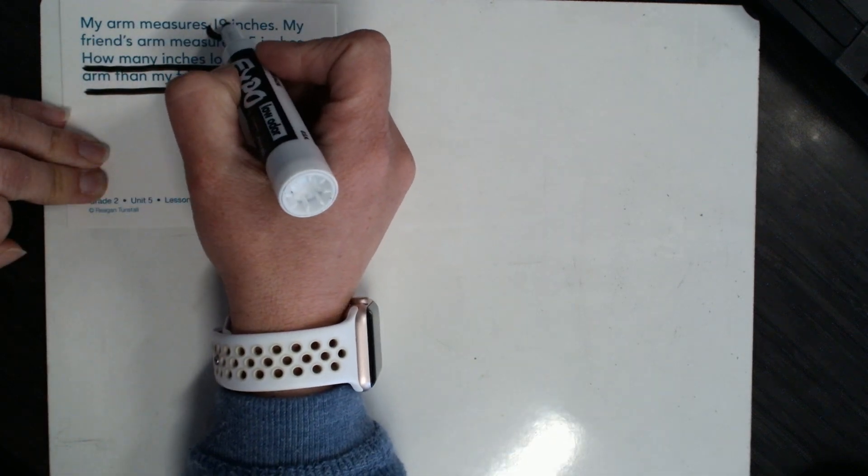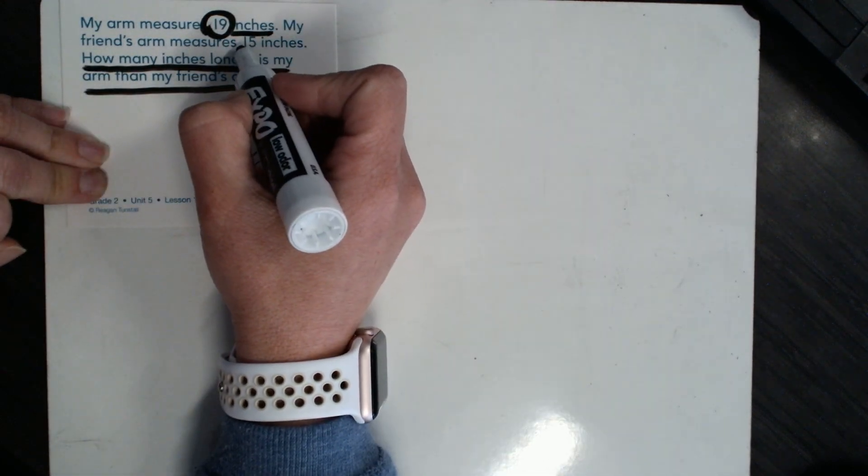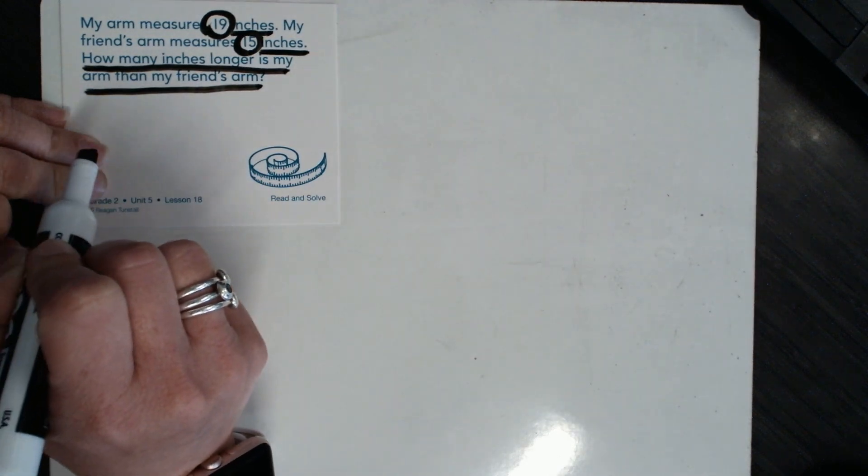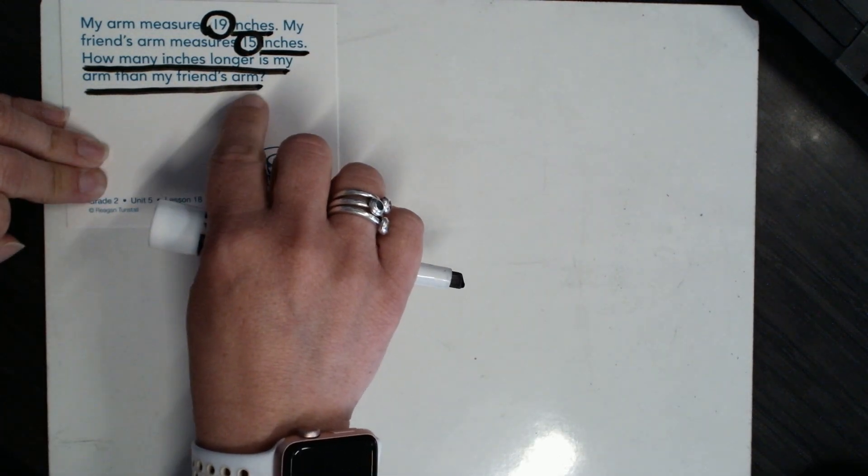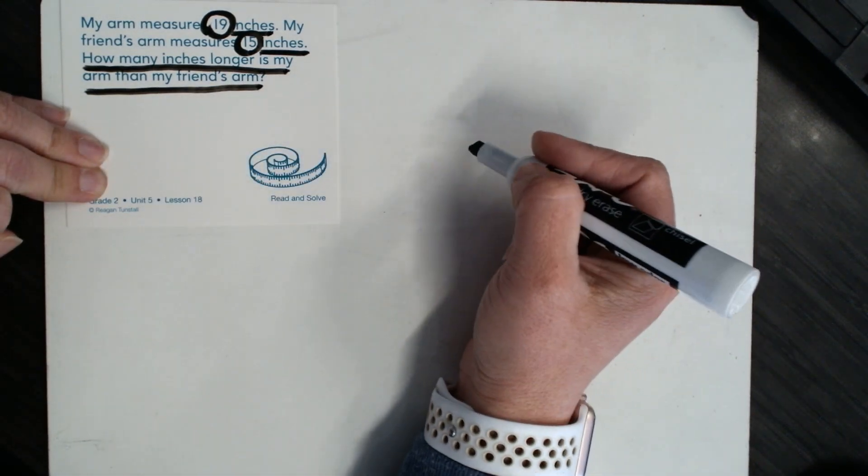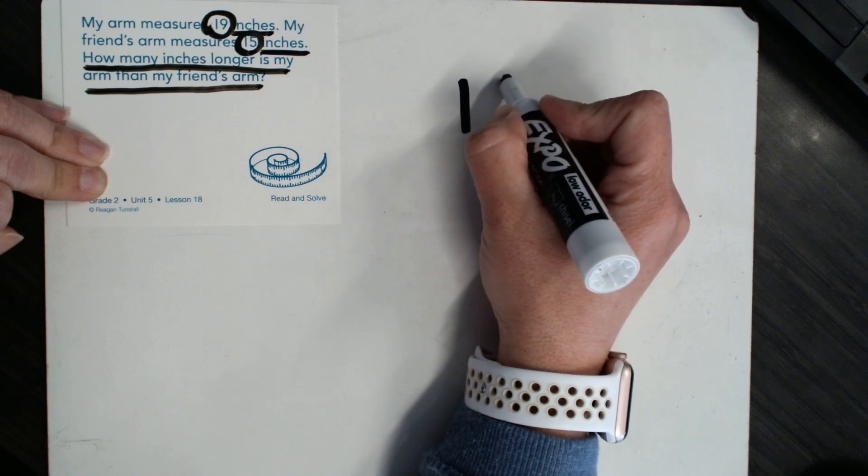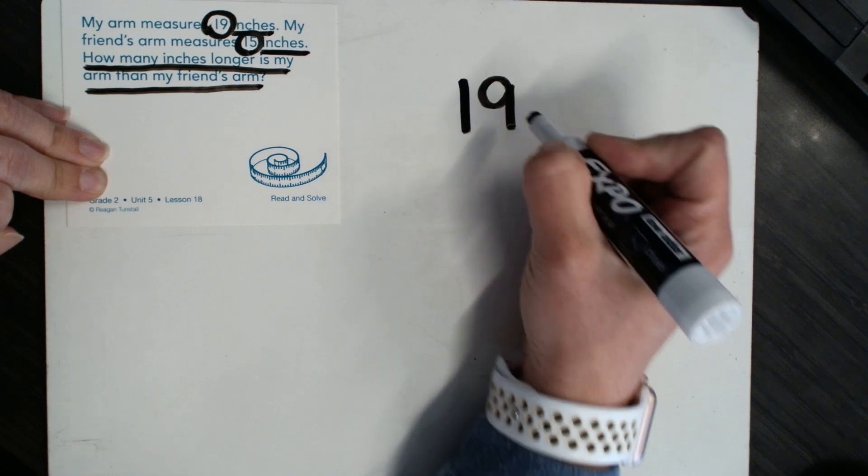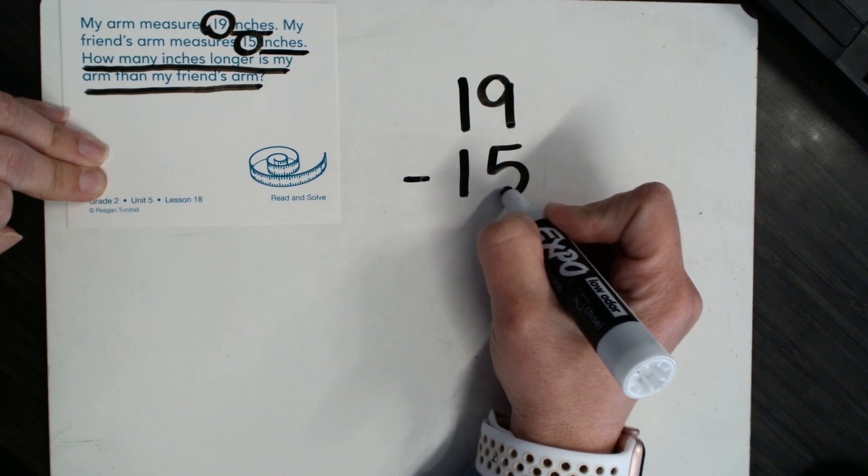My arm measures 19 inches. My friend's arm measures 15 inches. How many inches longer is my arm than my friend's arm? So yes, I need to find the difference between 19 inches and 15 inches. So finding the difference means I'm going to subtract 19 minus 15.